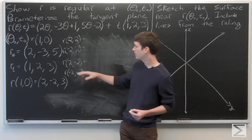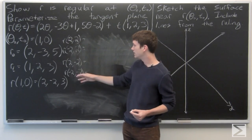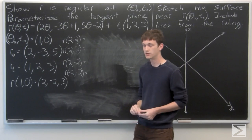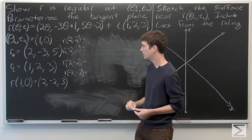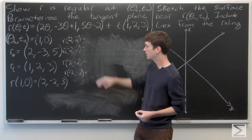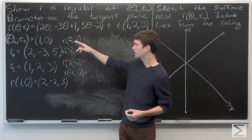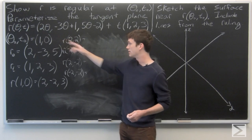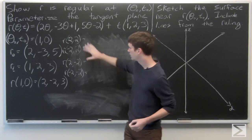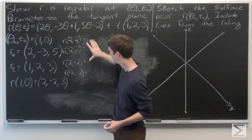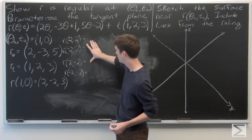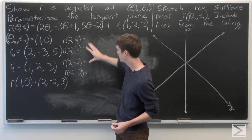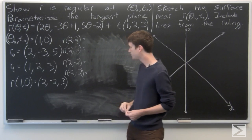We can also use these four points to get two lines by holding θ constant, giving us another pair of parallel lines from the ruling.